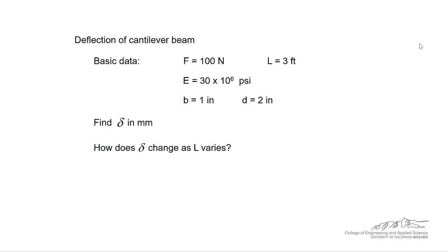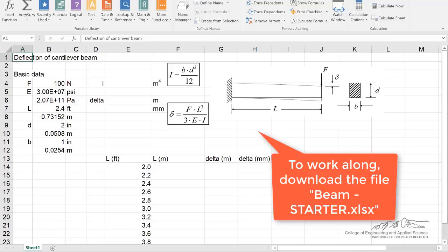And we're going to determine delta as a function of L. So let's go ahead and set this up in Excel. You can download this file if you'd like. It's called beamstarter.xlsx.